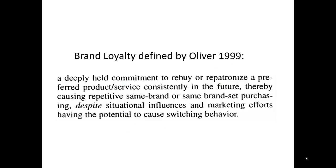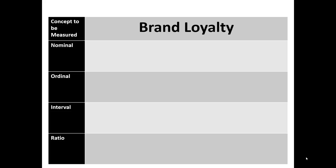Let's give a few examples of how some concepts can be operationalized multiple different ways at multiple different levels of data. Let's take this idea of brand loyalty. In 1999, Oliver defined brand loyalty as a deeply held commitment to rebuy or repatronize a preferred product or service consistently in the future, thereby causing repetitive same-brand or same-brand-set purchasing, despite situational influences and marketing efforts having the potential to cause switching behavior. That's a lengthy definition, and not the only definition of brand loyalty out there. Let's see if we can attempt to operationalize this definition into some different measurements at four different measurement levels.